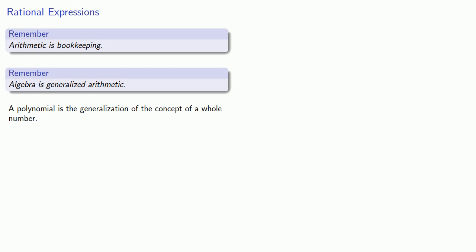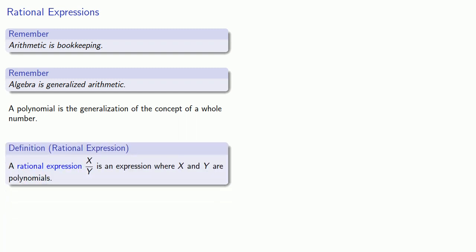And once we have whole numbers, we can do other things like form fractions. And this leads us to the idea of a rational expression. A rational expression, x over y, is an expression where x and y are polynomials. And if polynomials are the generalizations of the whole numbers, then rational expressions are the generalizations of fractions.